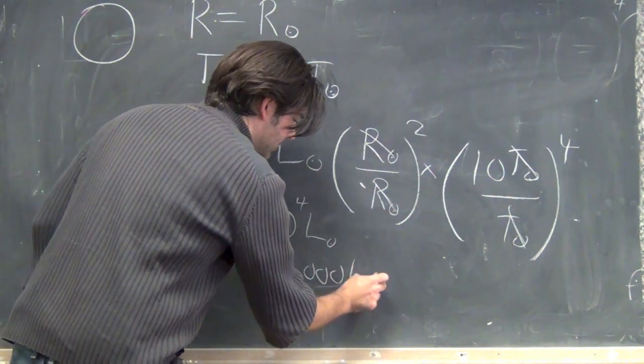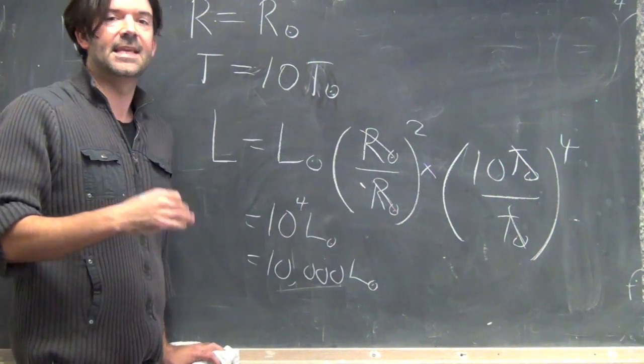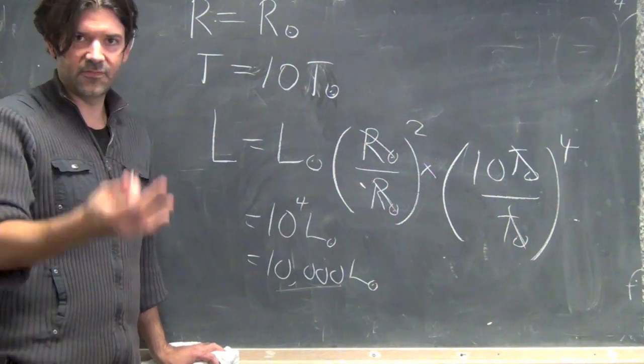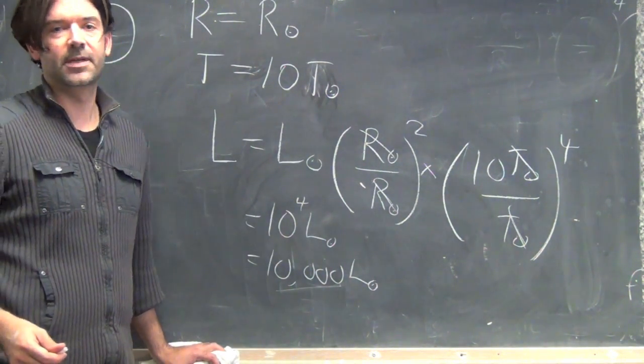10,000 times the luminosity of the sun. So, by having a star which is only 10 times hotter than the sun on its surface temperature, you get something which is 10,000 times more luminous.